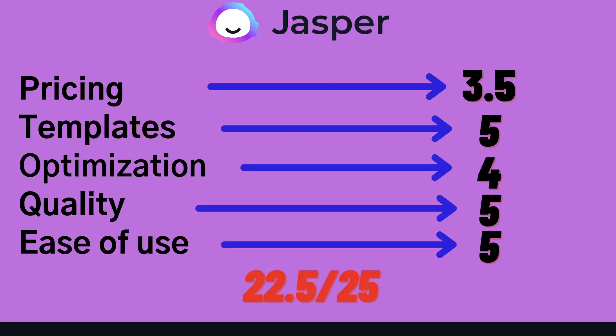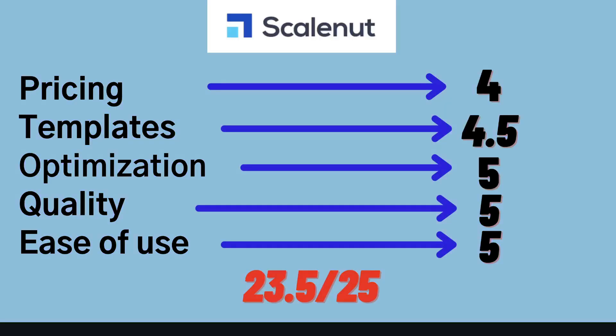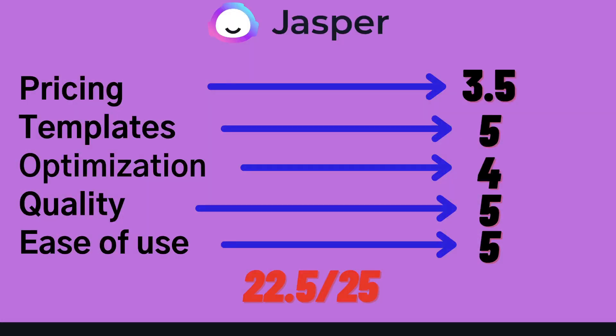Both of these tools are very high-quality AI copywriters and I highly recommend you go out and try them for yourself. I'll leave a link for both of their free trials in the description below this video. I hope you enjoyed this video and that you're able to get some clarity between Jasper AI and Scalenut, and that this helps you make a better decision when choosing between these two AI copywriters. If you enjoyed this video, don't forget to give us a big thumbs up and subscribe to the channel if you haven't already. Until next time, stay well.